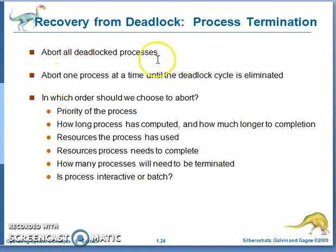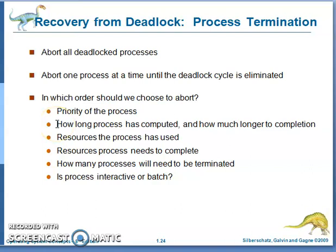In process termination, how do we choose which process to abort? There are several factors. The first factor is the priority of the process. The second is how long the process has been computing — how much time it has spent and how much longer it needs to complete. Third is how many resources the process has used, and how many resources it still needs to complete.